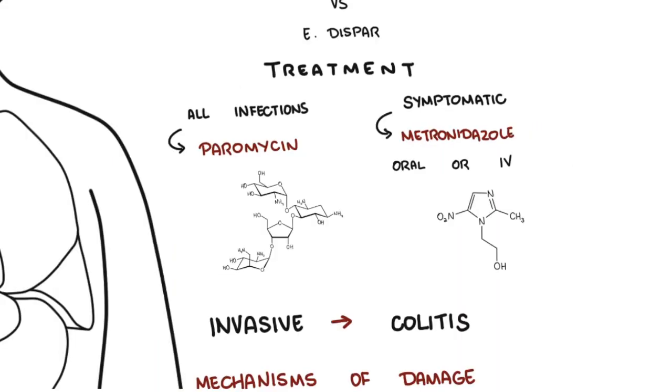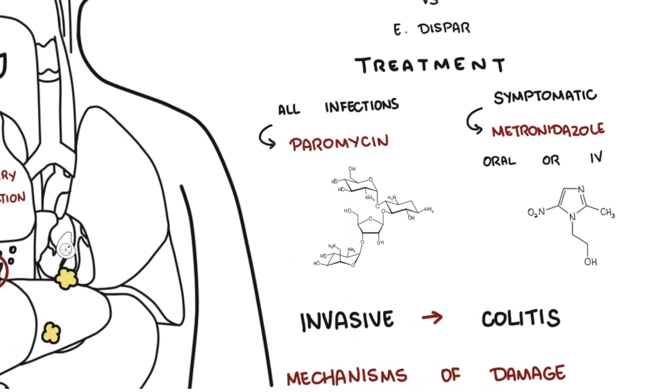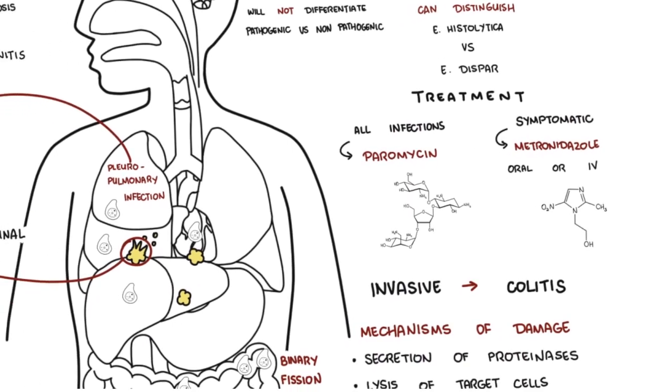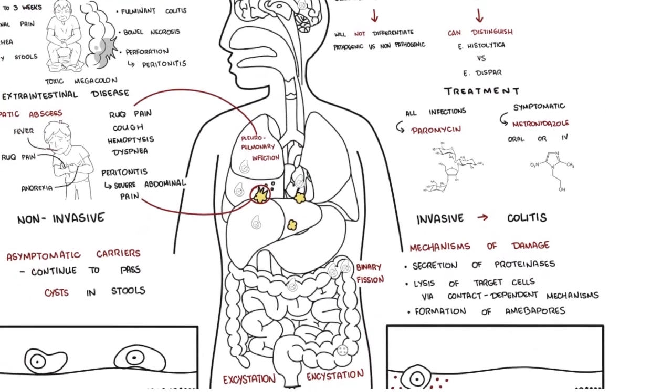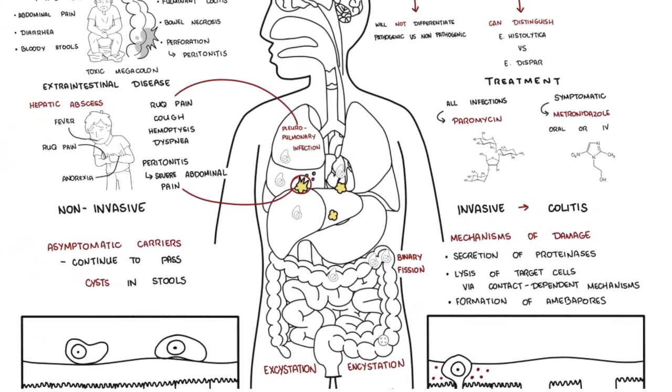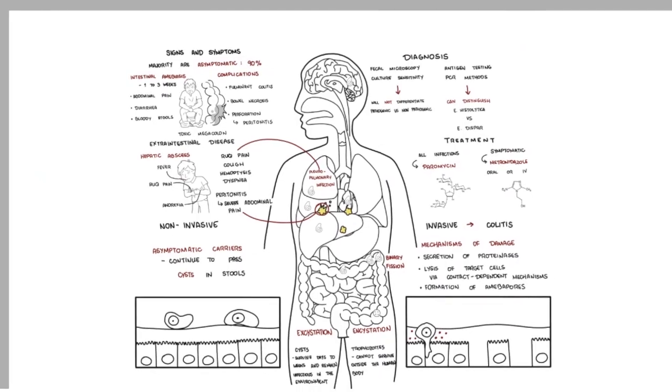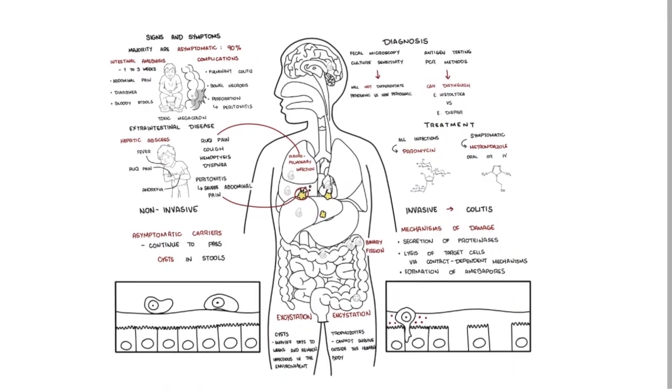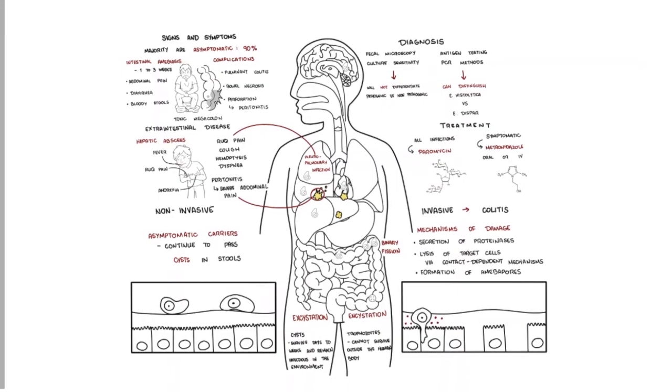In summary, amoebiasis is a parasitic infection caused by Entamoeba histolytica. The clinical presentation varies, including mainly asymptomatic infections or intestinal and extra-intestinal infections.